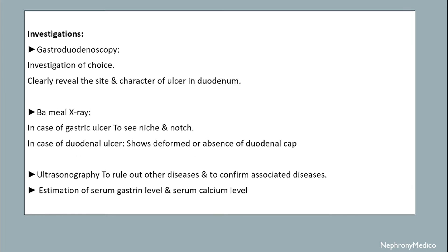Investigations include gastroduodenoscopy, which is the investigation of choice, barium meal X-ray, ultrasonography to rule out and confirm associated diseases, and estimation of serum gastrin level and serum calcium level.